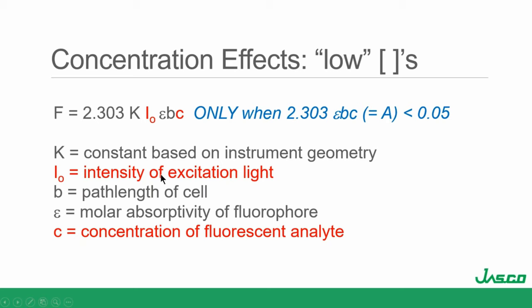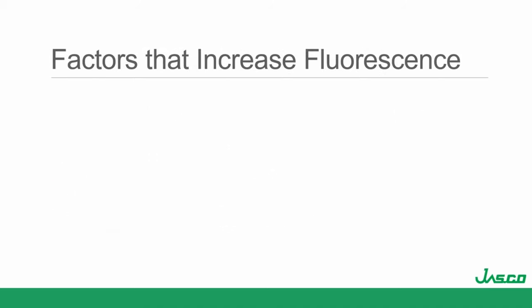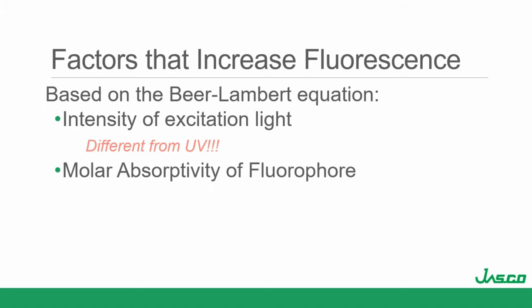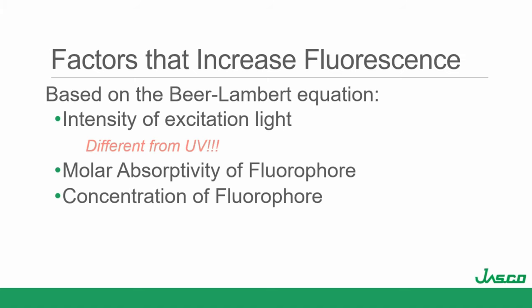Factors that increase fluorescence based on the Beer-Lambert equation: number one is the intensity of excitation light. That's going to be different from UV-Vis — in UV-Vis we send light in, look at transmitted light, take a ratio, and I lose that advantage. The molar absorptivity of the fluorophore also matters — if it absorbs photons better, it has a greater chance of emitting as fluorescence. And concentration of the fluorophore will be important up to a point before other effects take over, which we'll look at at the end of this talk.